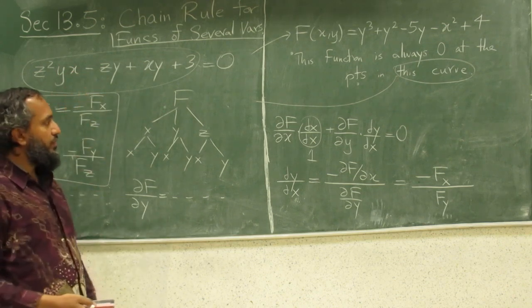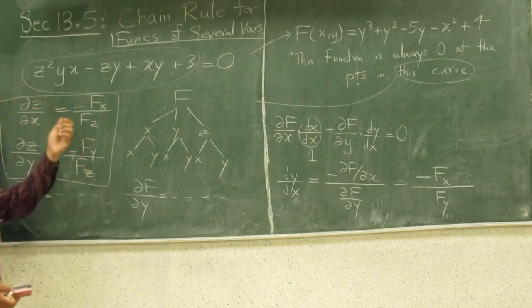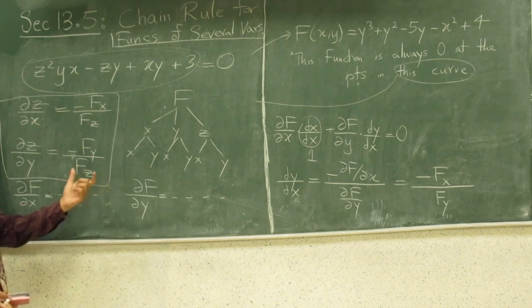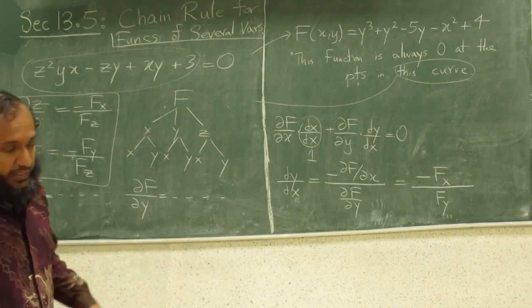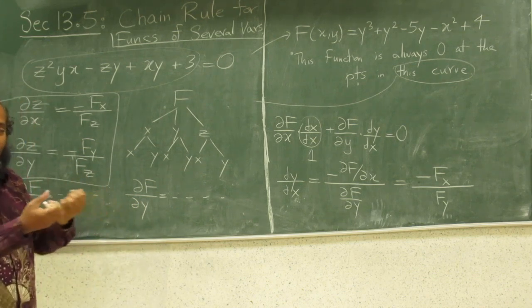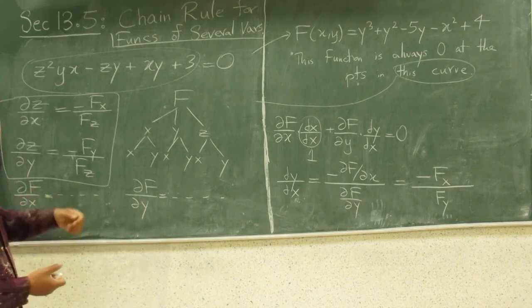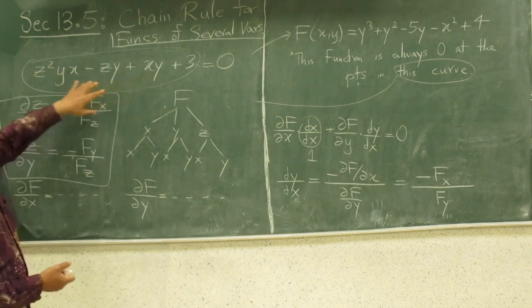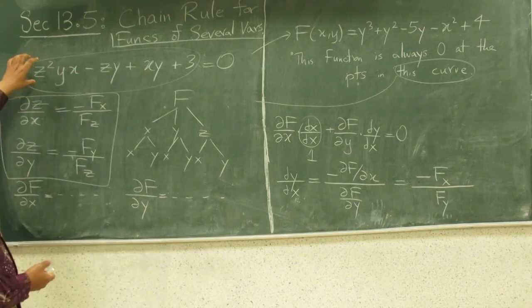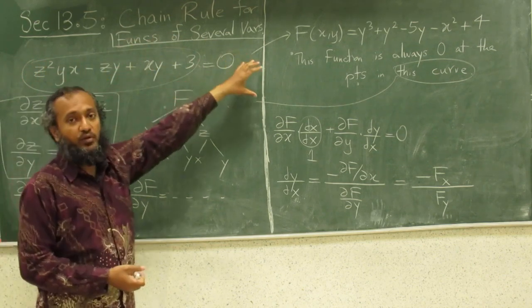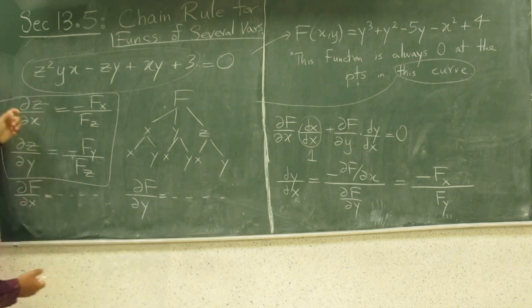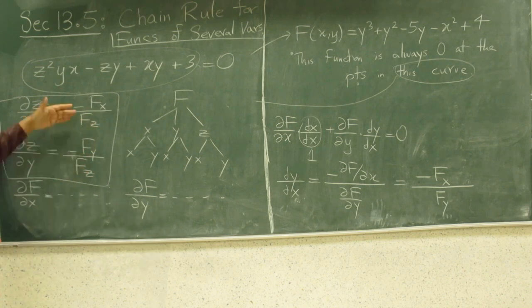So, the chain rule can help us also do implicit differentiation for functions of one variable as well as functions of two variables, in a given equation where it's hard to extract y as a function of x, or z as a function of y and x. It will be very hard to extract z out of this thing and express it as z as something involving only x's and y's. So, that's why we cannot do that here, that method, we're going to do implicit differentiation and find the answer this way.